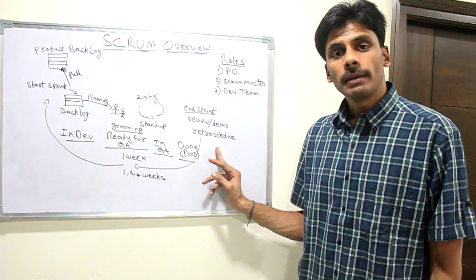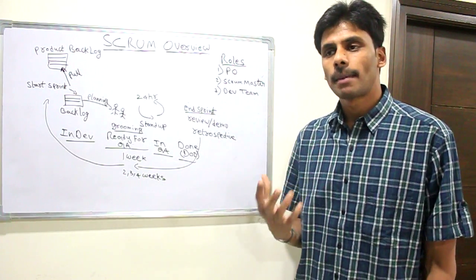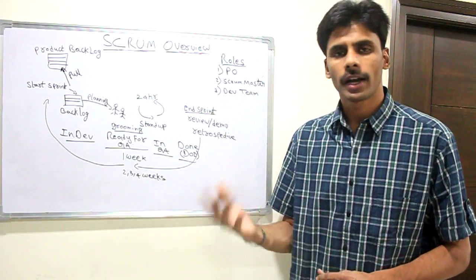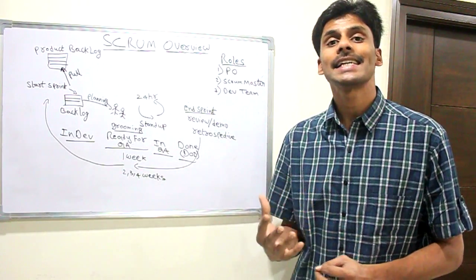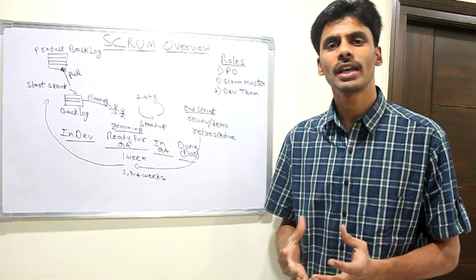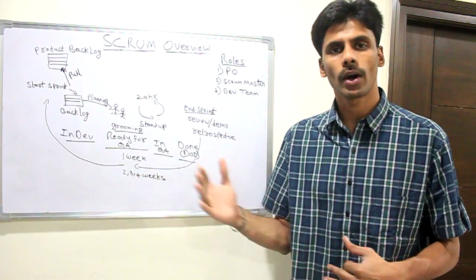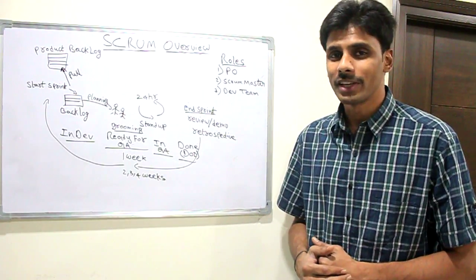In the retrospective meeting, every team member gets a chance to tell the scrum master or to fill in an Excel sheet or any other tool with what went well that sprint, what didn't go well, and insights for the future. That's the key in the agile world or the scrum world, wherein we can keep improving as the product progresses from the mistakes we have done in the previous sprints.